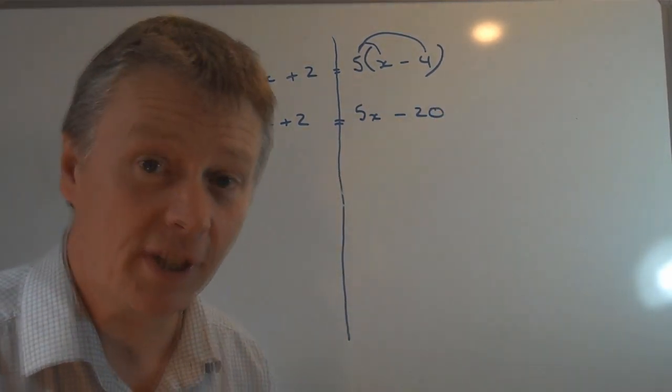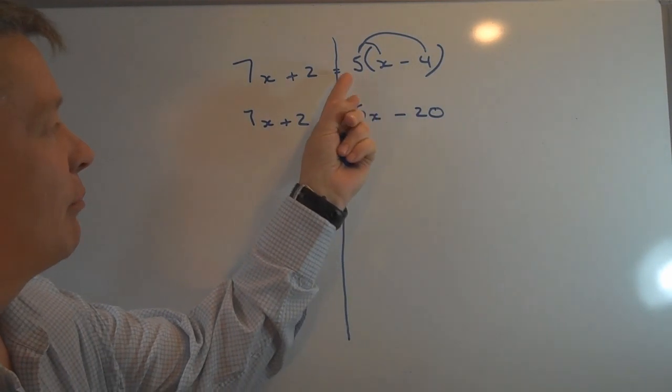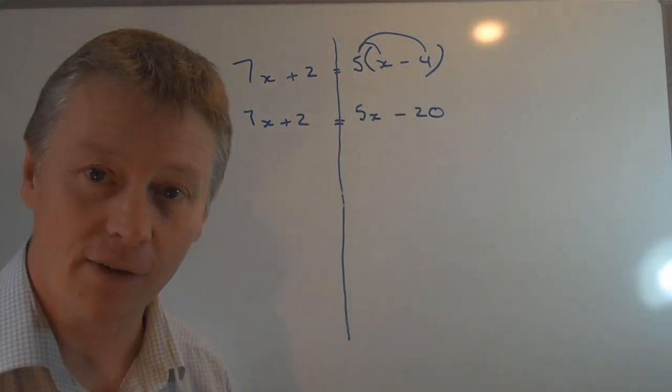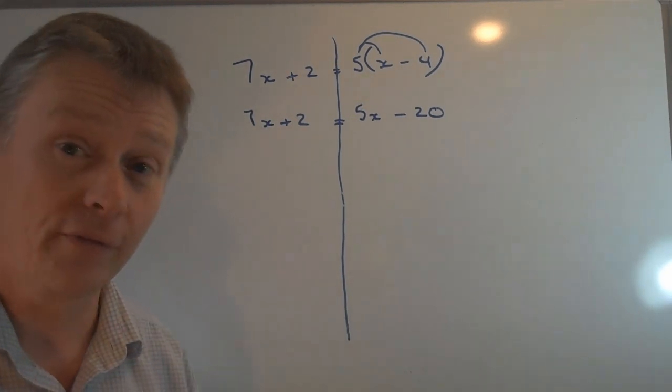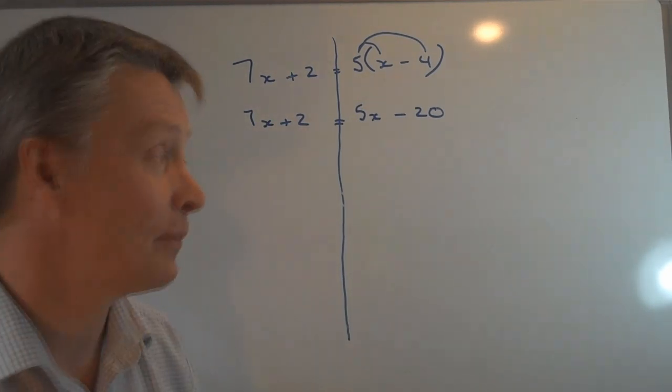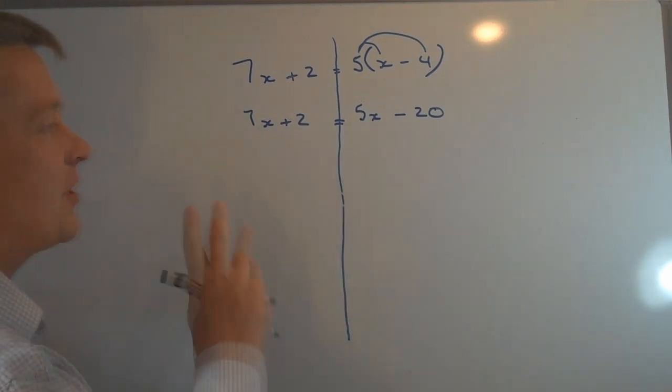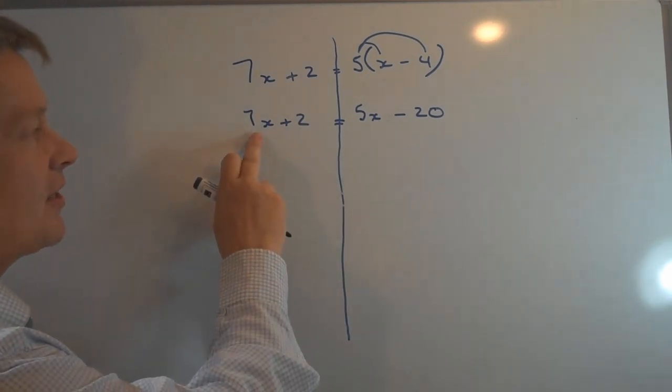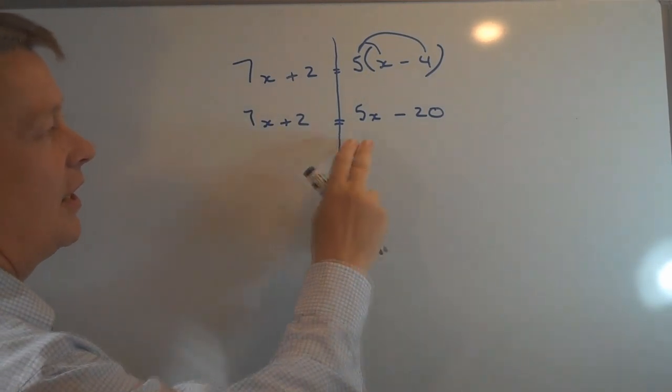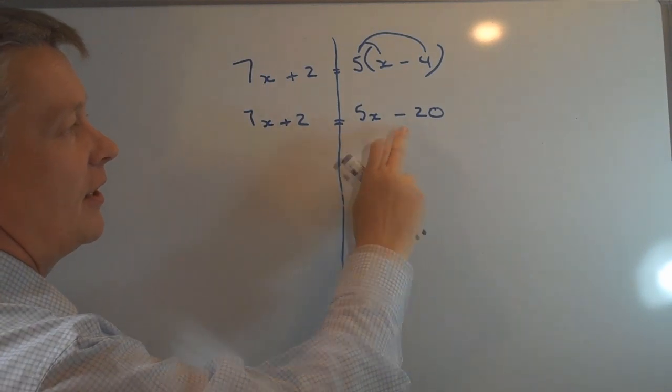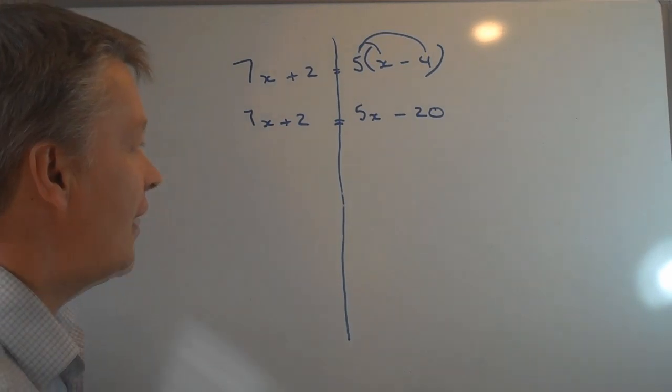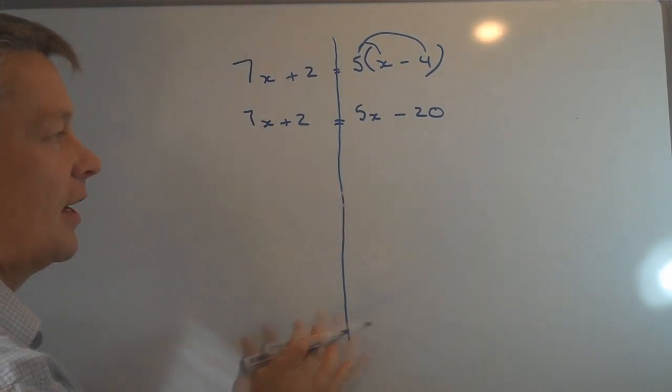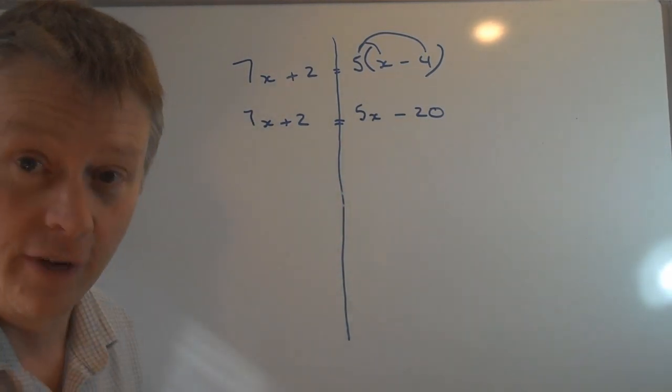Just be a little bit careful about multiplying positives by negatives and you always get a negative sign, and there is another video that talks about how to do that. So I'm in a situation now where I have 7X this side plus 2 and 5X this side minus 20, and really what I want to achieve is to have all my Xs on one side and all my numbers on the other.